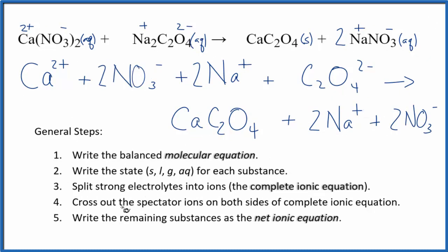Next, we'll cross out the spectator ions. These are ions that appear on both sides of the equation, in the reactants and in the products. Because they appear on both sides, they haven't changed, so we just cross them out. We have two nitrate ions here, and then in the products, two nitrate ions. Just cross those out. We have two sodium ions, and in the products, we have two. Cross them out.